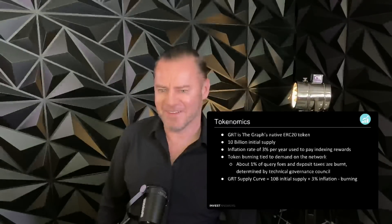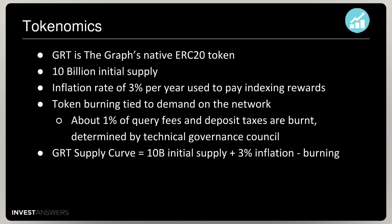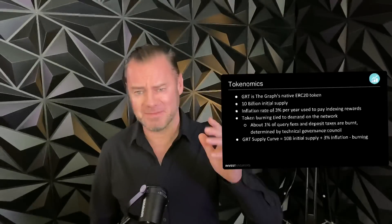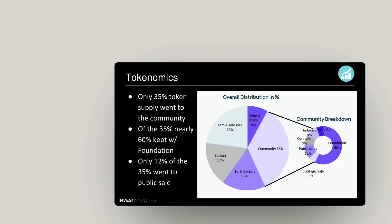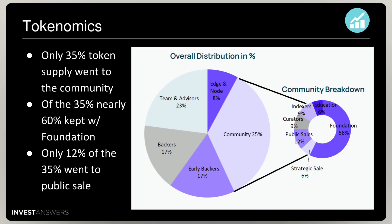But not everything is well thought out — here we get into the tokenomics. GRT is the graph's native ERC-20 token: 10 billion initial supply, inflation rate 3%, 1% burned. The team and backers have 57% — I think this is very greedy. The community has 35%, but of that, 6% was a strategic sale, 58% is with the foundation, and only 6.3% really goes to the indexers and curators. And 4% goes to the public sale.